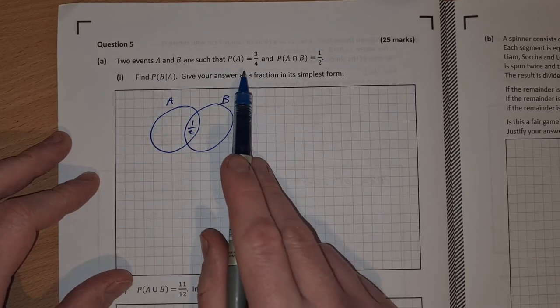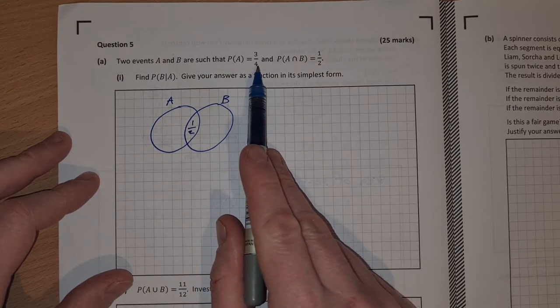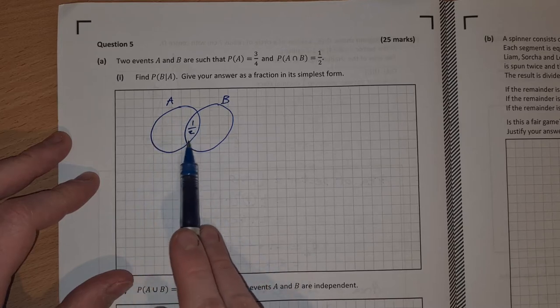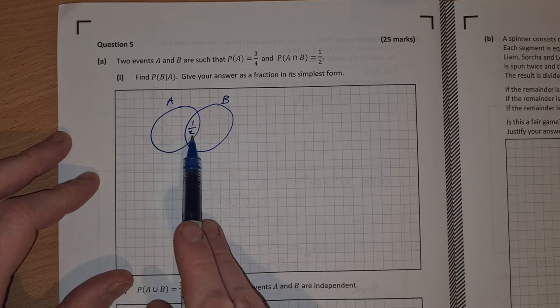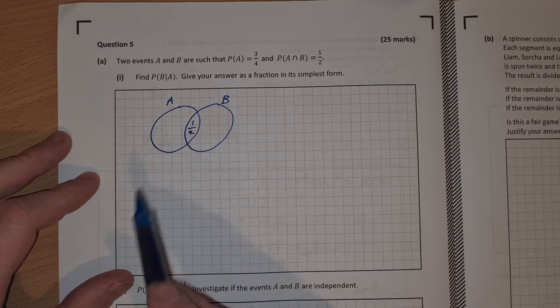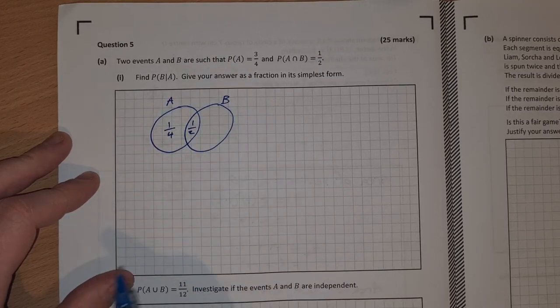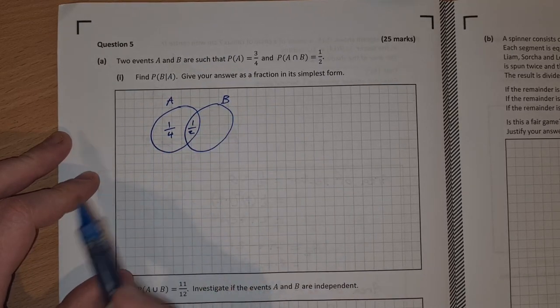And the probability of A happening is 3 quarters. So A in total is 3 quarters. If we already have a half in there that means there's only a quarter left in A on its own.